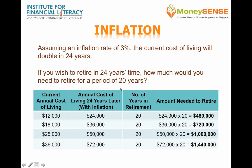The question we need to ask ourselves is, how much will we need to retire for a period of 20 years? That means from the time you retire until the time you pass on, it will be a period of 20 years. Now, assuming that the current annual cost of living was $12,000, in 24 years' time with inflation, the annual cost of living will double to $24,000. So assuming that you can live on $24,000 a year, you would probably need about $24,000 times 20, which is $480,000 at the point of your retirement.